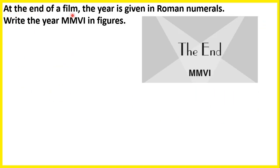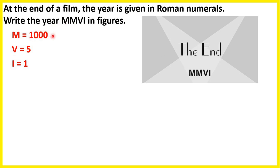At the end of a film, the year is given in Roman numerals. Write the year MMVI in figures. M represents 1,000, V is 5, and I is 1. So if we have 2 Ms, that's 2,000, and then VI means 5 and 1, so that's 6. So that means the year is 2006 — 2 Ms means 2,000, and VI is 5 plus 1, so that's 6.